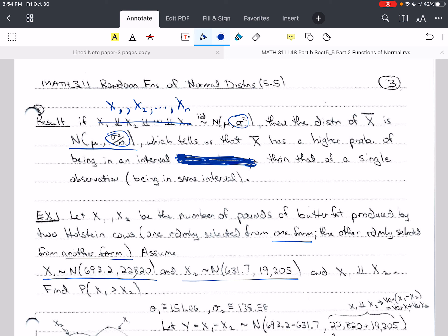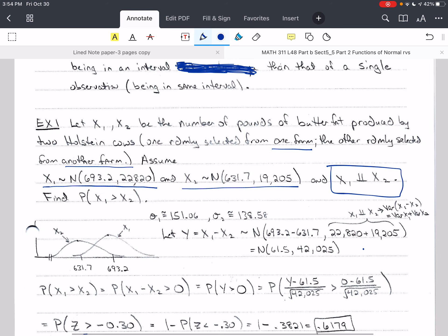And let's say that we know that the distribution of output of butterfat of both cows is given here. And again, we're assuming that x₁ and x₂ are independent. So they're not related because they're from different farms.